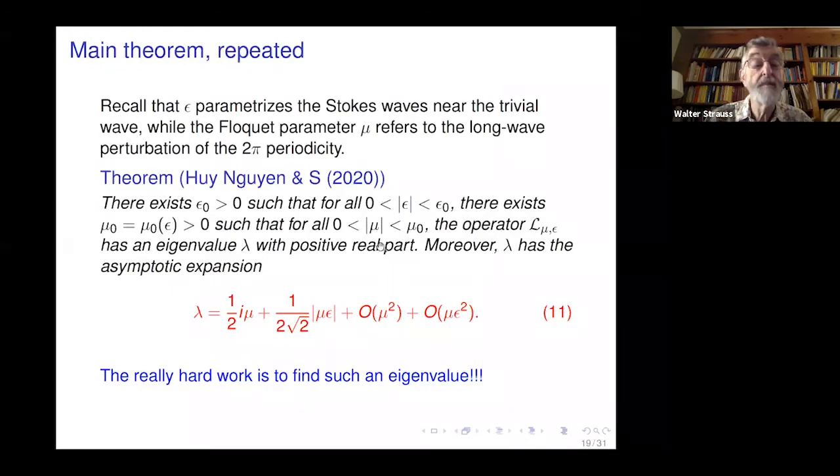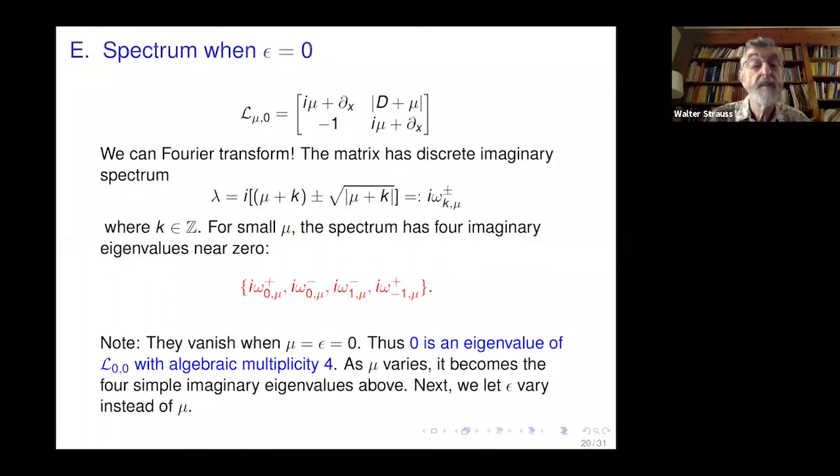Here's the theorem again, stated more carefully. Epsilon is the smallness of the Stokes wave, mu is the Floquet parameter. It says if they're both small, then here's the eigenvalue and here's the real part. The hard work is to find such an eigenvalue. I think this is deeper than the nonlinear problem, honestly. You have to do this before you could even consider the nonlinear instability.